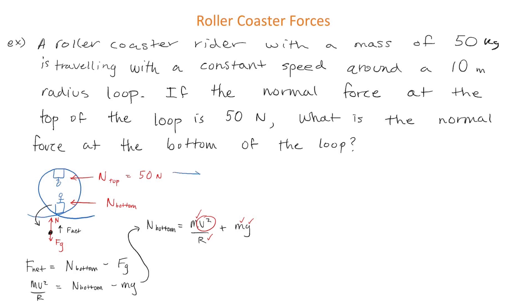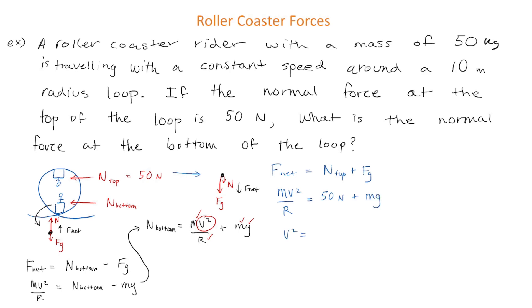We draw a free body diagram for the rider at the top of the loop, then write our F_net equation: F_net = N + F_g. We replace F_net with mv²/r, the normal force with 50 N, and F_g with mg. All we need to do is rearrange and isolate for v, the speed of the rider.